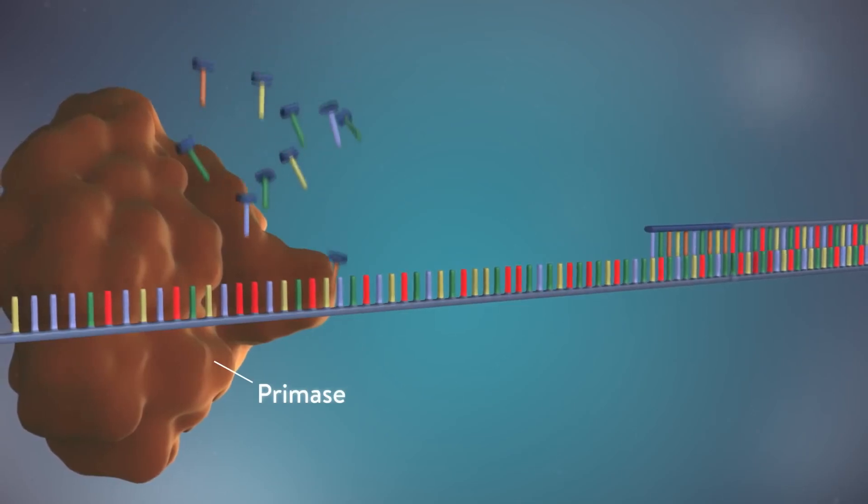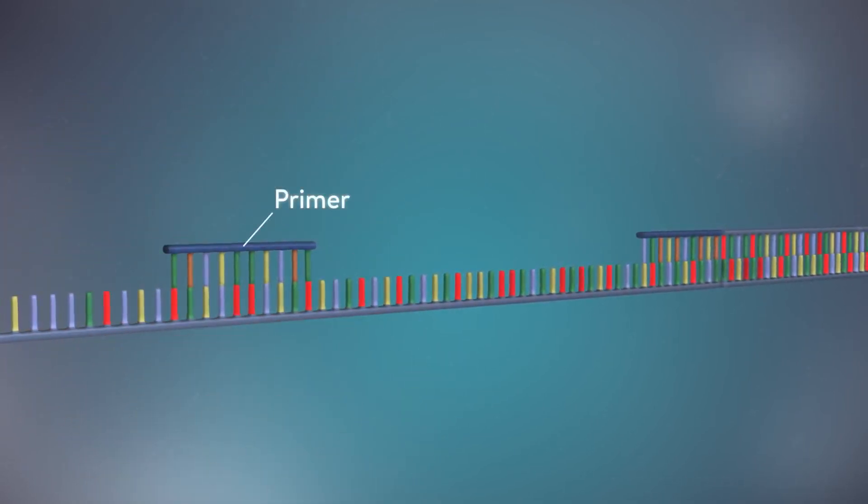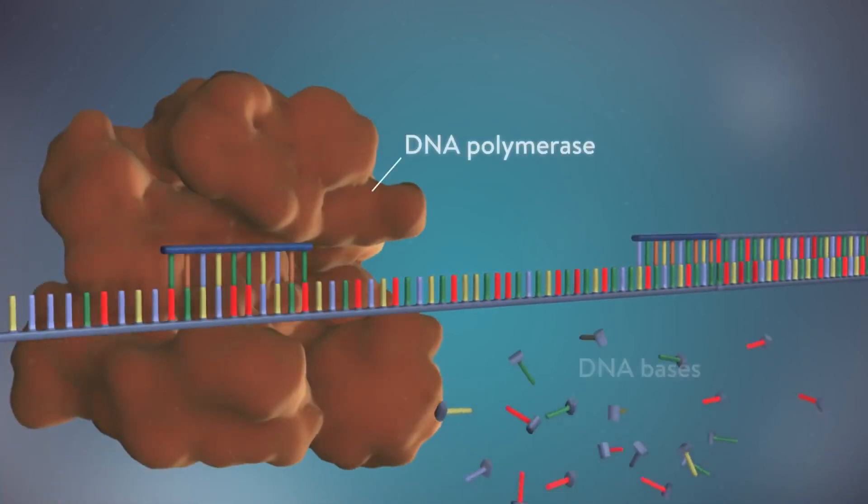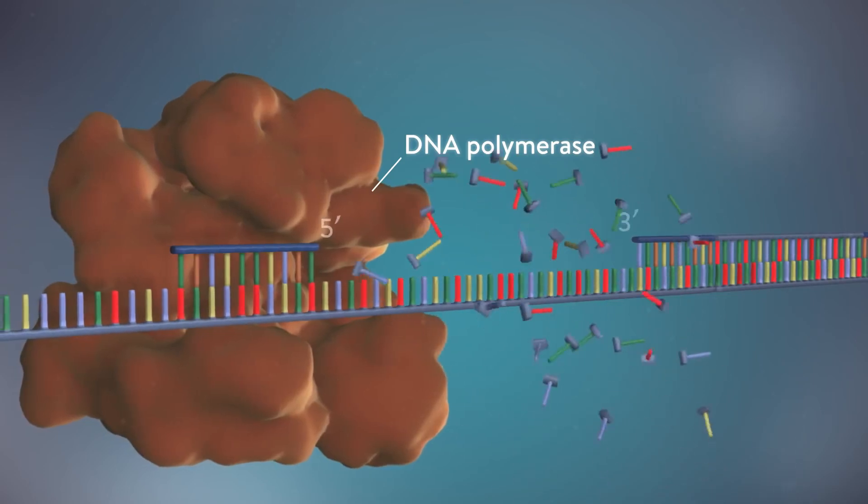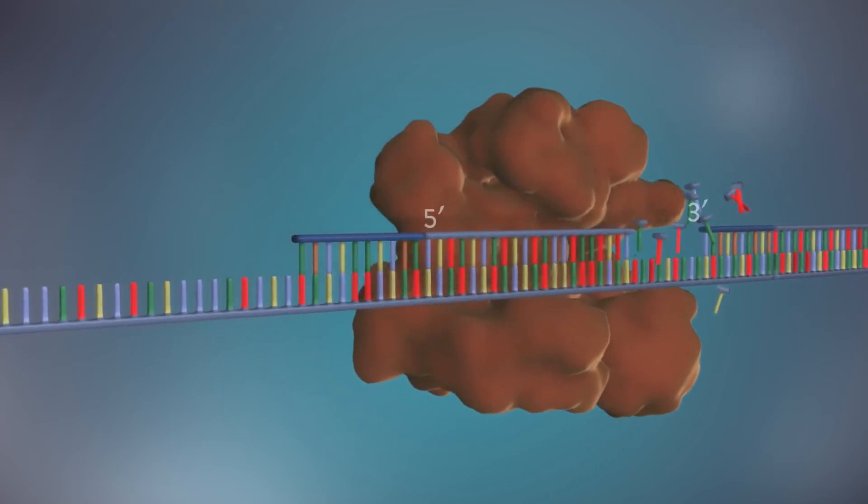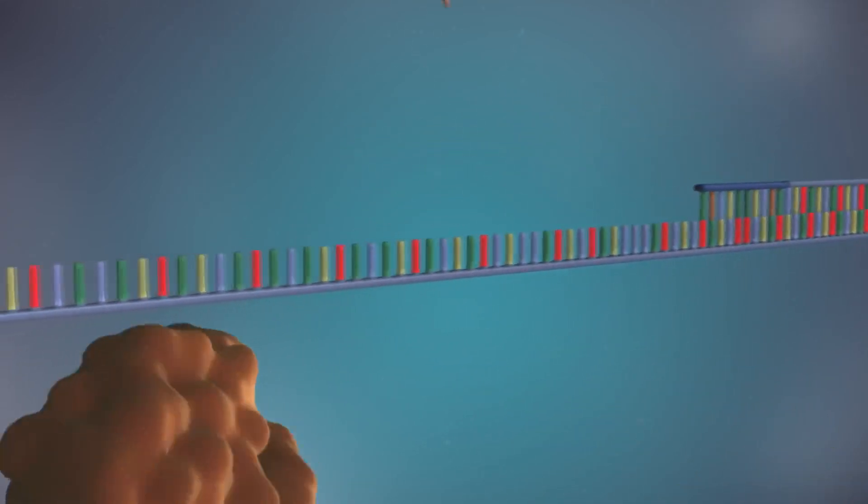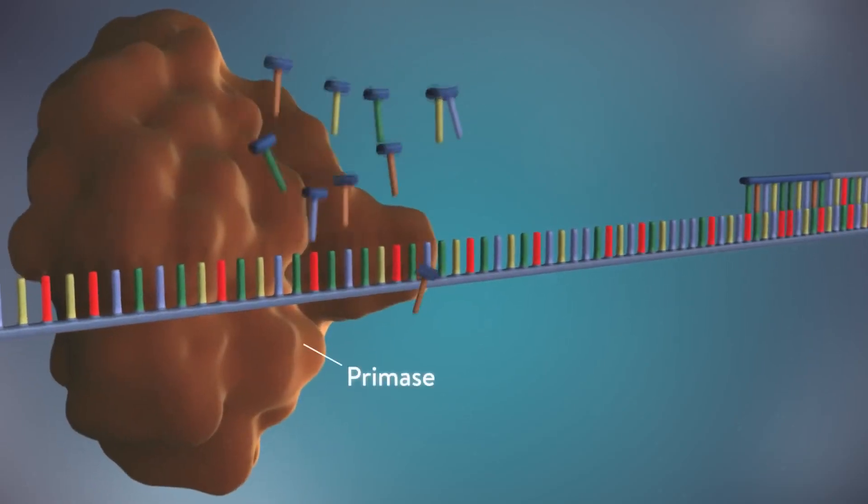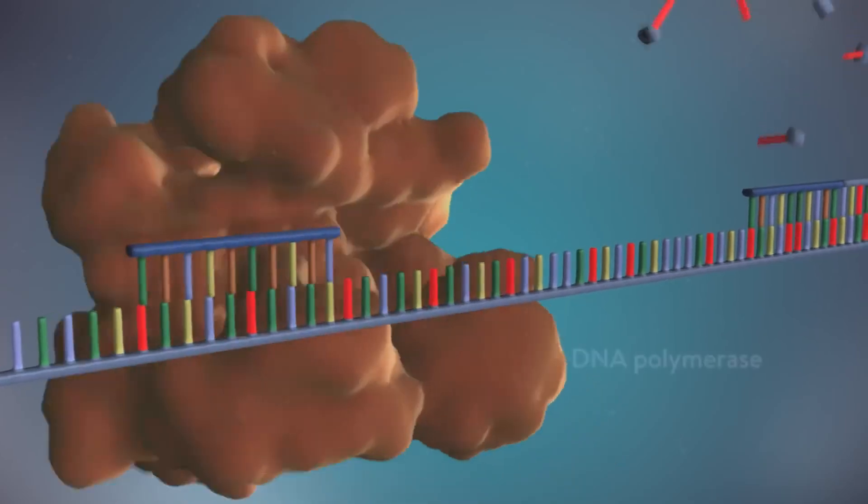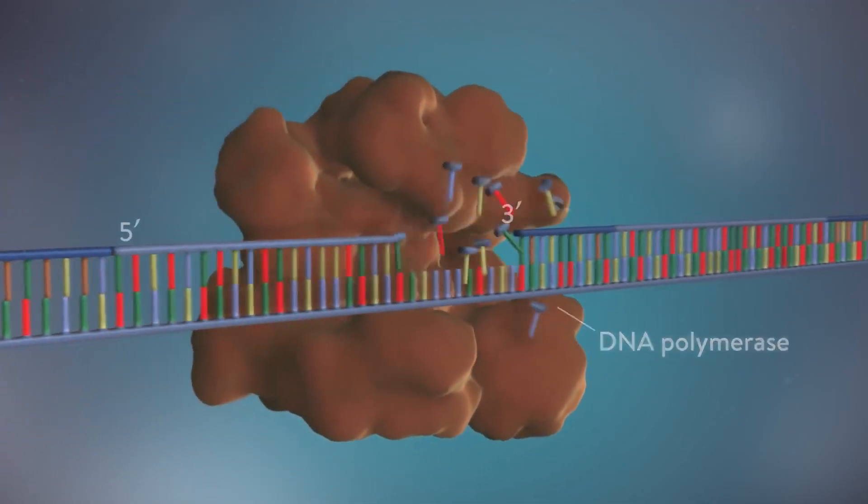Each fragment is started with an RNA primer. DNA polymerase then adds a short row of DNA bases in the 5' to 3' direction. The next primer is then added further down the lagging strand. Another Okazaki fragment is then made and the process is repeated again.